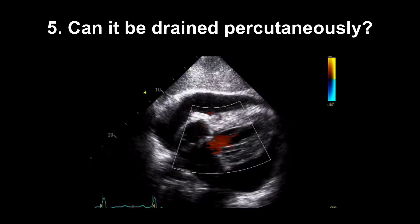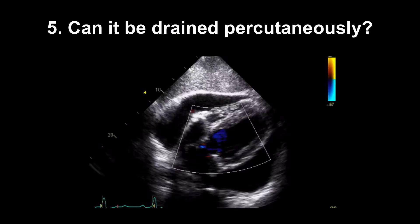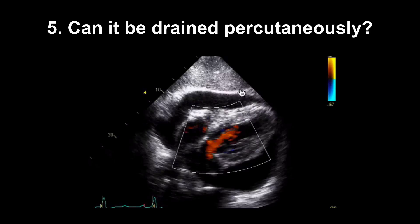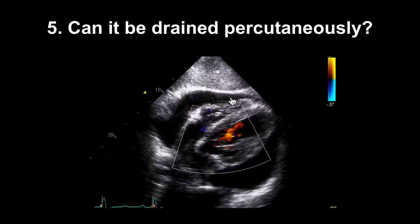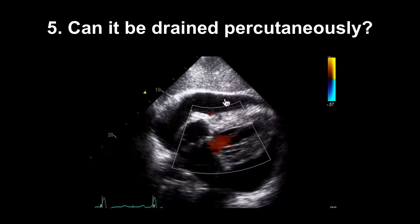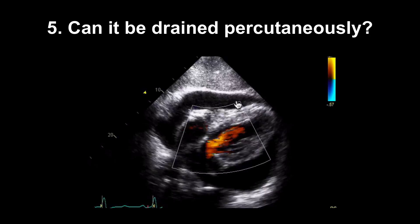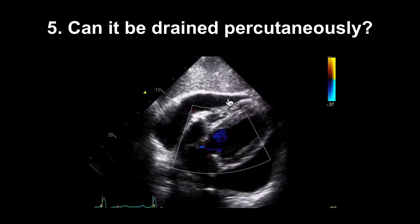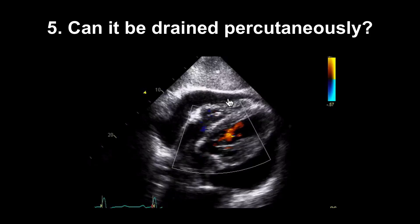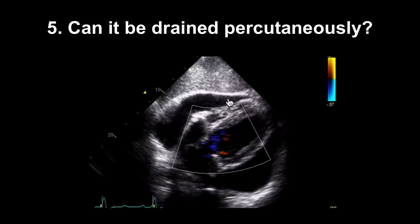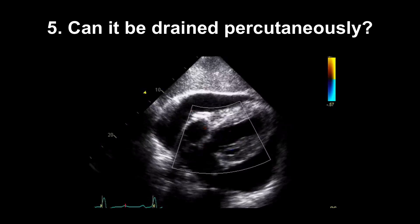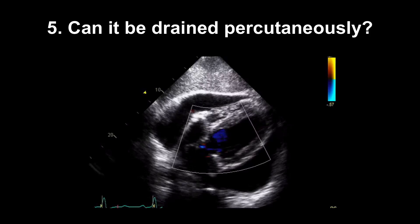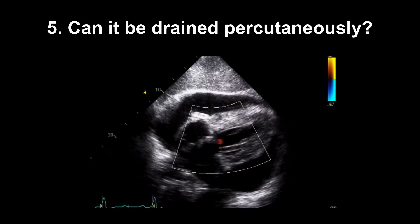The other question you'll be asked is: can we drain it percutaneously? Usually the needle would come in around here, and you'd ideally want at least two centimetres of fluid at that point to position the needle. You may get away with one centimetre; if not, an alternative drainage site may be better. You can use contrast to confirm you're in the effusion itself, so it's worth keeping your echo machine available during drainage.